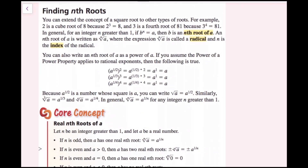You can extend the concept of a square root to other types of roots. For example, 2 is a cube root of 8 because 2 cubed equals 8, and 3 is a fourth root of 81 because 3 to the fourth power equals 81. In general, for an integer n greater than 1, if b to the n-th power equals a, then b is an n-th root of a. An n-th root of a is written with radical notation, where n is the index of the radical.